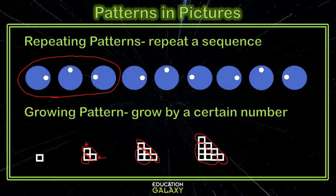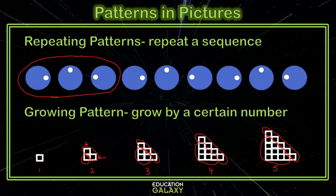And the diagonal has the same number of blocks as terms it is. So term 3 adds 3 to the diagonal. Term 4 adds 4 to the diagonal. Term 5 adds 5 to the diagonal.